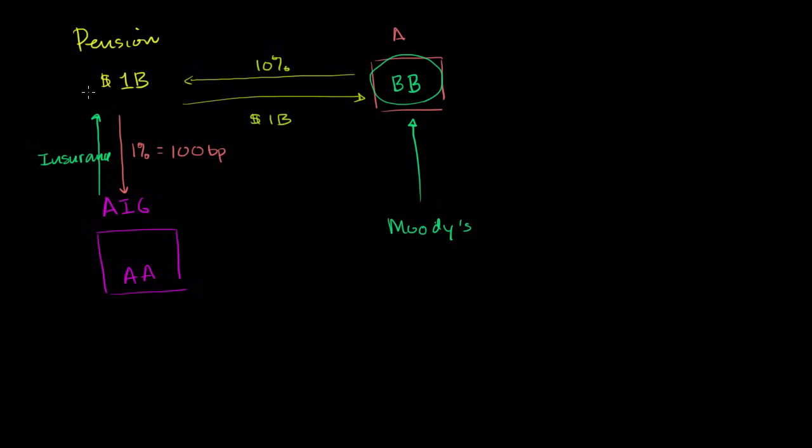Now, from the pension's point of view, this sounds pretty good. They're now getting a net 9% of interest, 10% minus the 1%. And they're essentially getting to lend to a double B company, but it's in effect like lending to a double A, because as long as AIG is good for the money, then the pension fund is going to get their money back one way or the other.